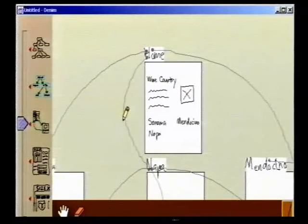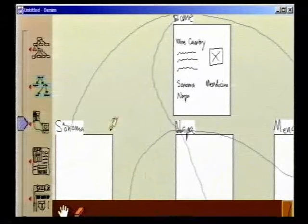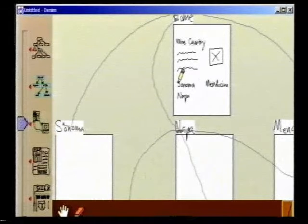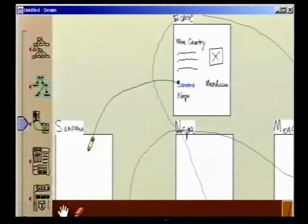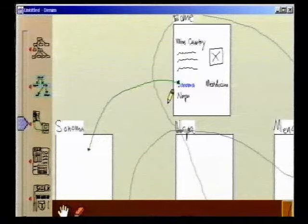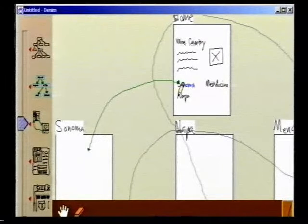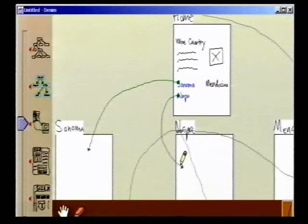Then he pans the canvas by gesturing in the direction where the page is. Once Bob sees both pages, he draws a line from a word in the first page to the second page. Denim turns the line into a navigational arrow, and the source of the link becomes blue. When a navigational arrow is first drawn, it replaces any organizational arrow that goes between the same two pages in the same direction.